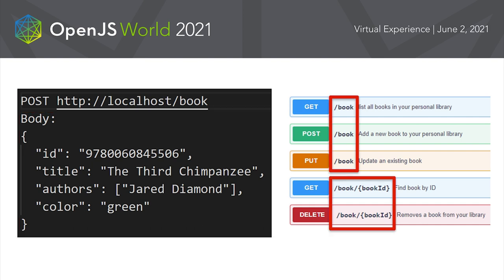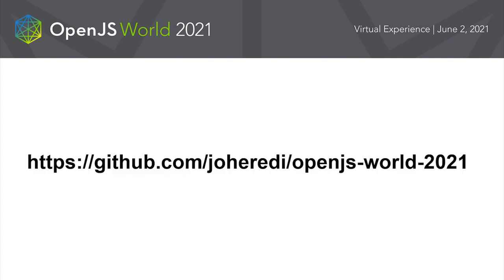On the right we have an image with the structure of the service we're going to be writing our client for. It has two resources. The first one supports GET, POST, and PUT methods. Our second resource takes a book ID as a path parameter and supports GET and DELETE methods. You can find the code from this talk on this URL. Now let's get started.